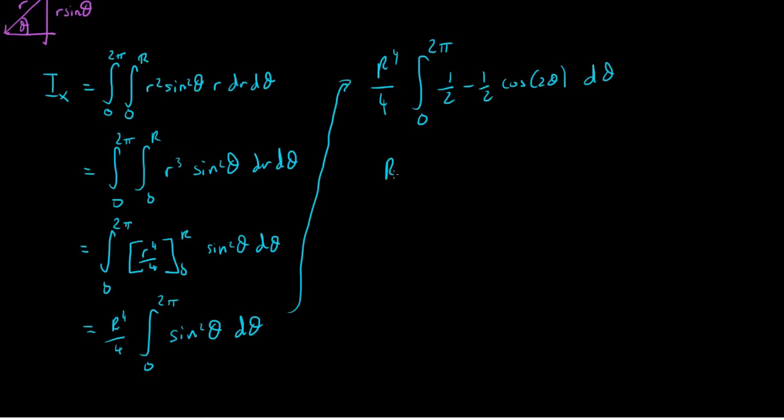So when we do this, we end up with r to the fourth over 4 times by 1 half theta minus 1 quarter, the 2 comes out, divide by 2 when we integrate, times by sin of 2 theta. It's just integrating that. But that's now between 0 and 2pi.